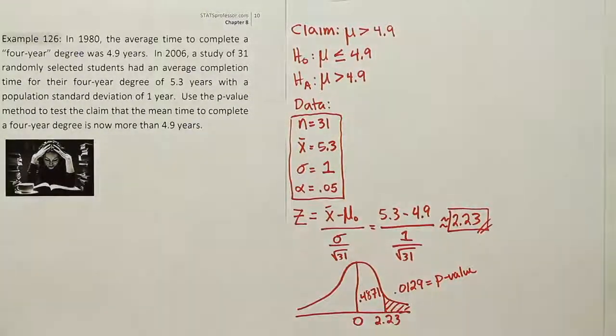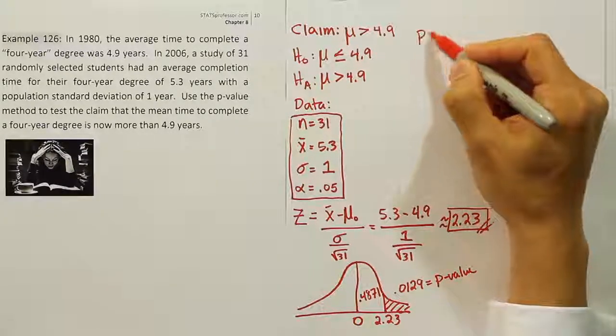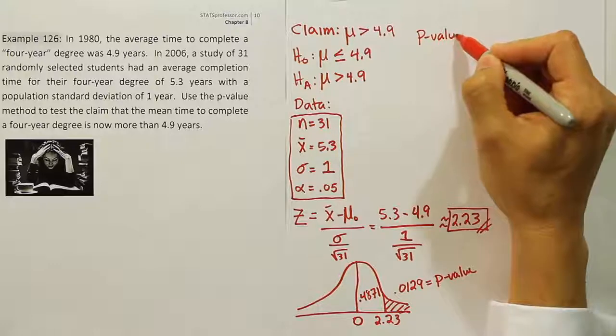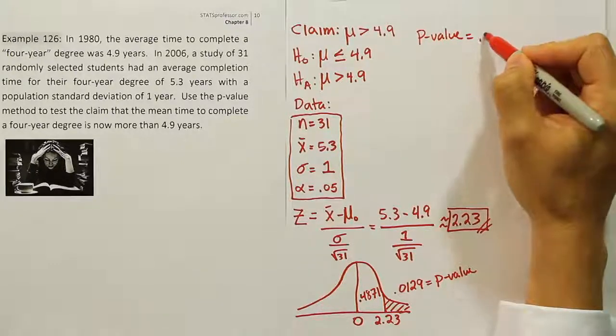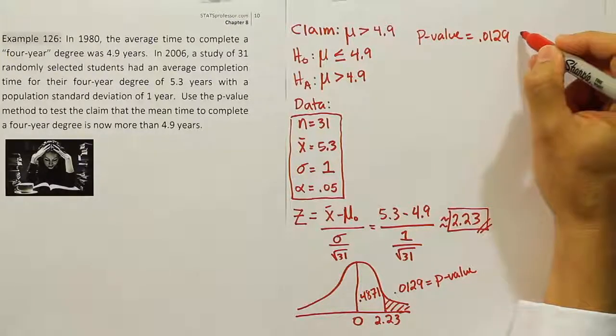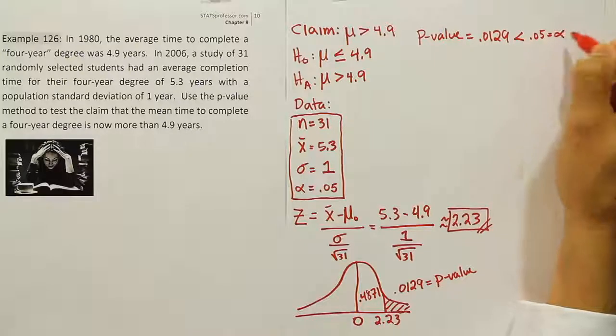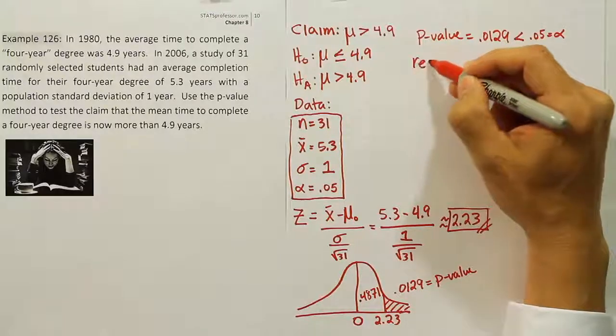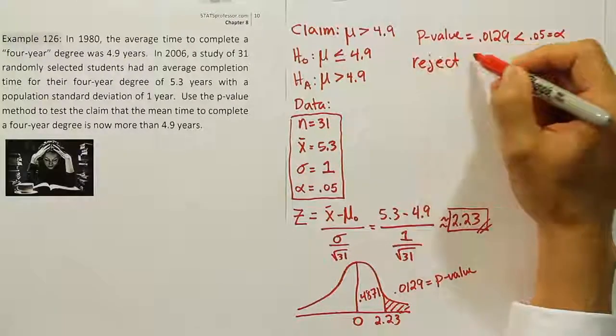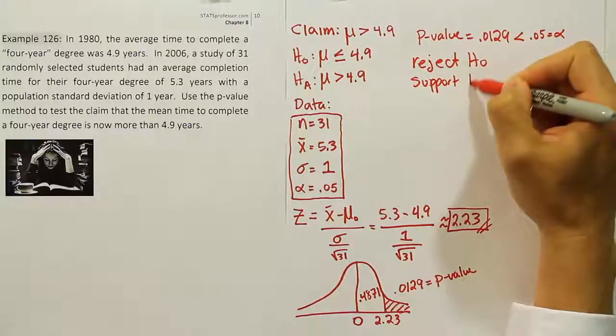Now we compare that p-value against alpha. The p-value equals 0.0129, and how does that compare to alpha? It is less than alpha, which is 0.05. At this point, we can conclude that the p-value is small compared to alpha, so we will reject the null hypothesis. Reject H0 and support HA.